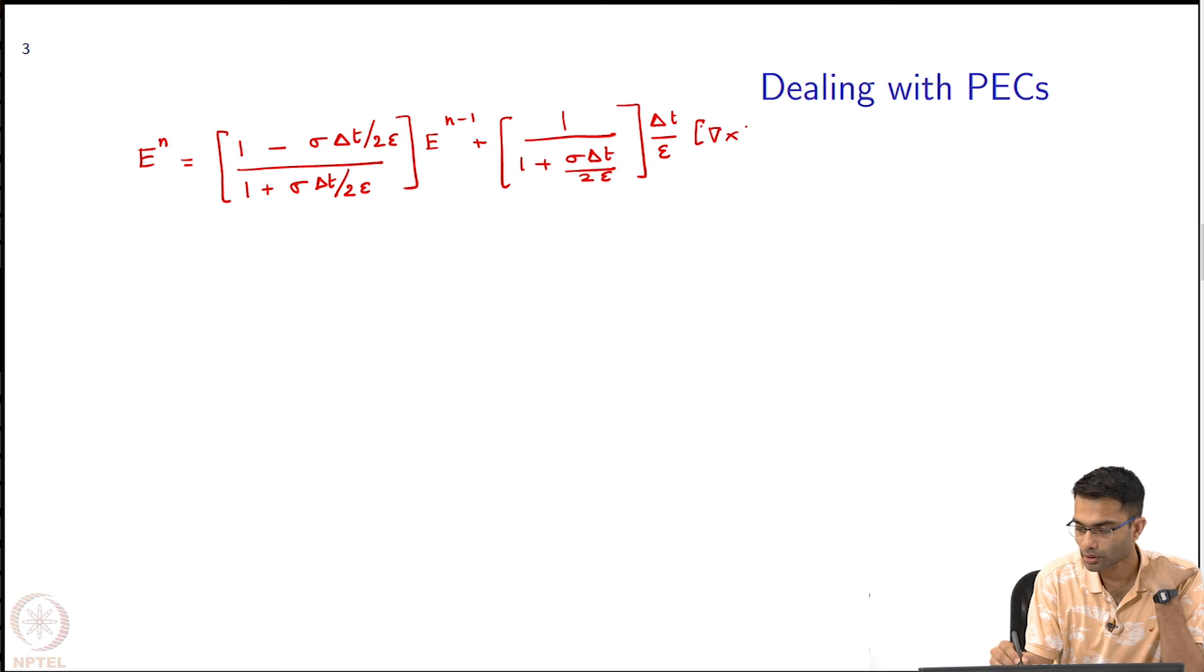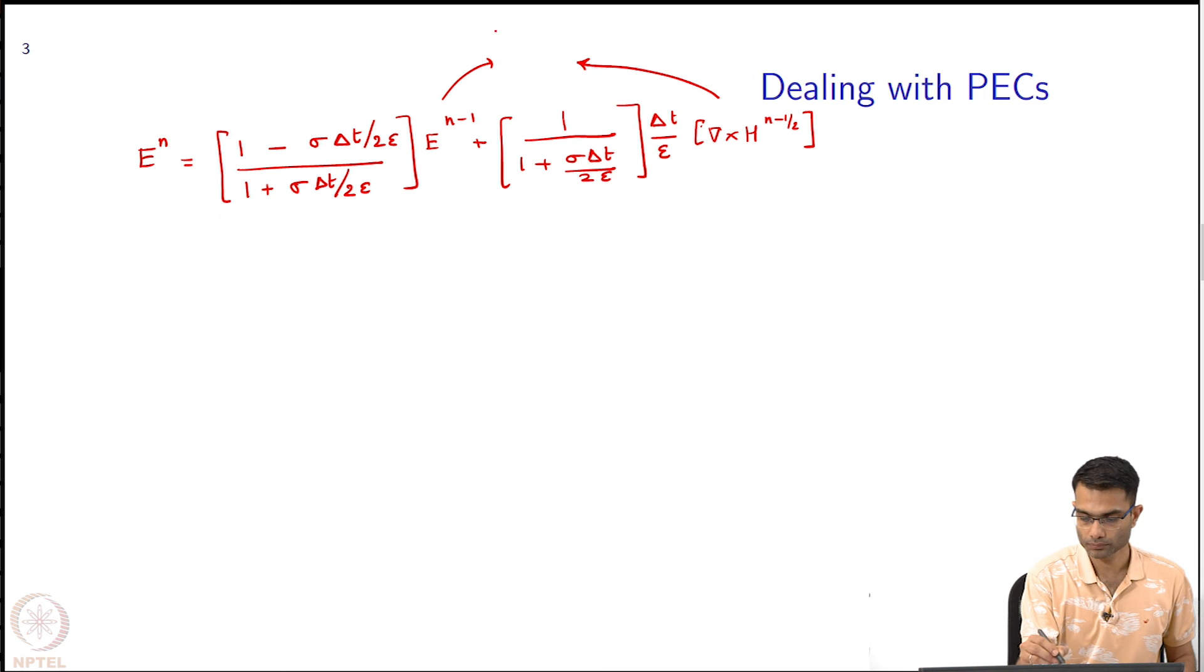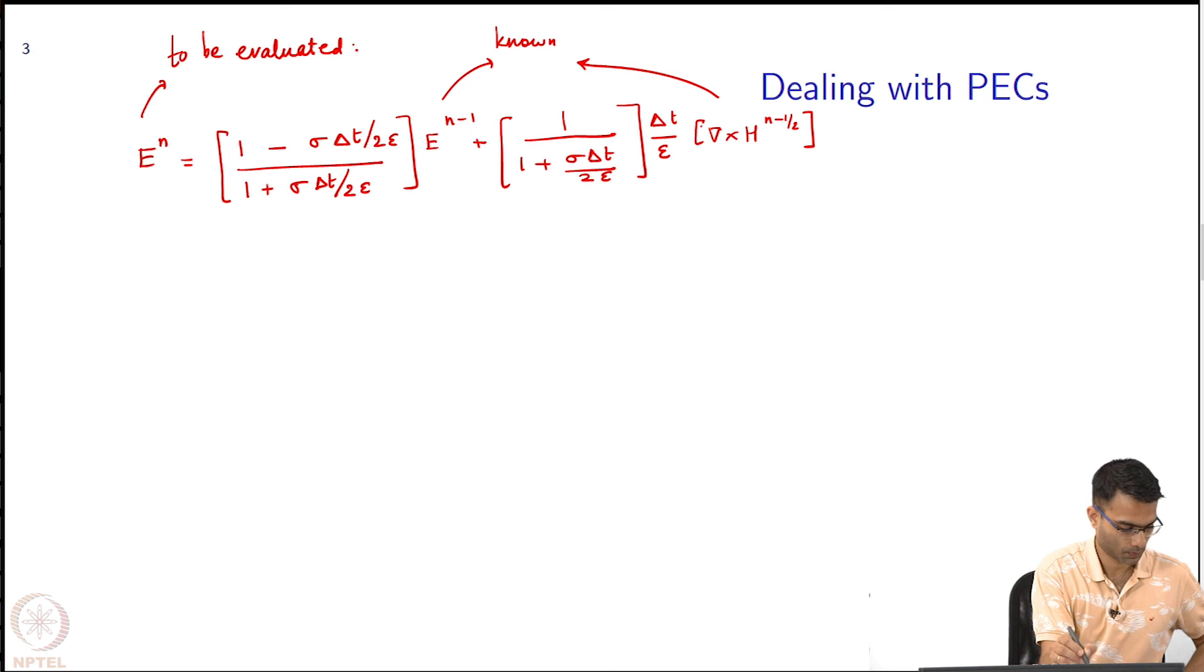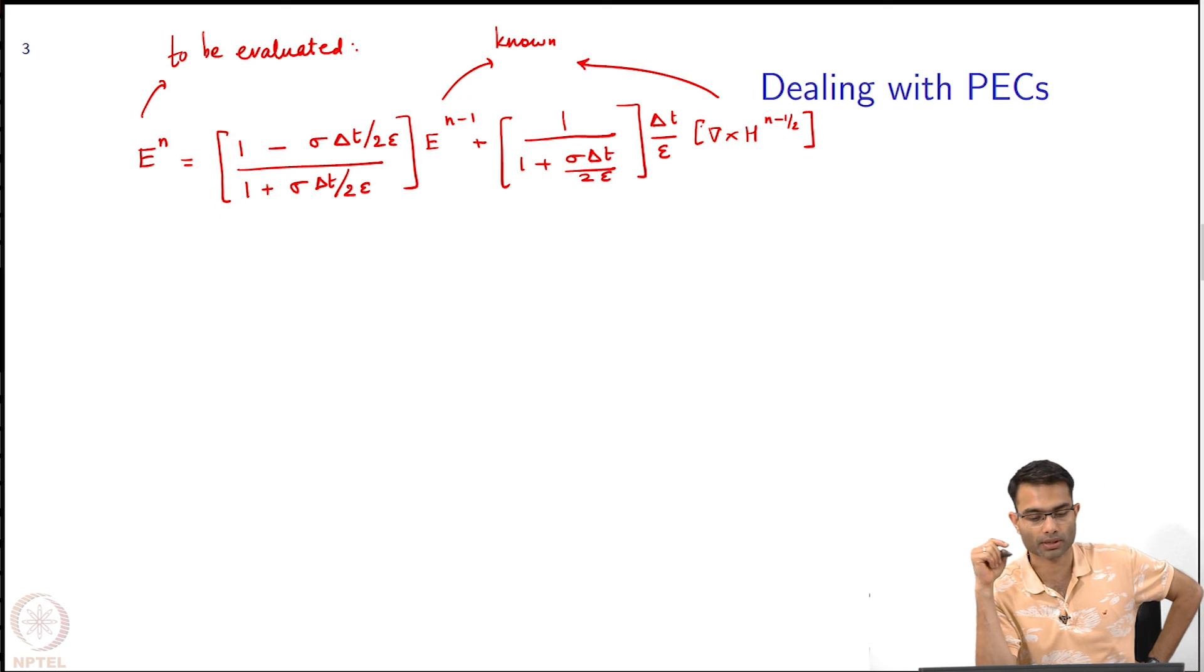You can confirm that that is also what you get. This is our update equation at this, plug in the values of sigma and epsilon. Remember here in what we have done, your epsilon here is referring only to the real part and sigma is the conductivity that is giving the loss part.